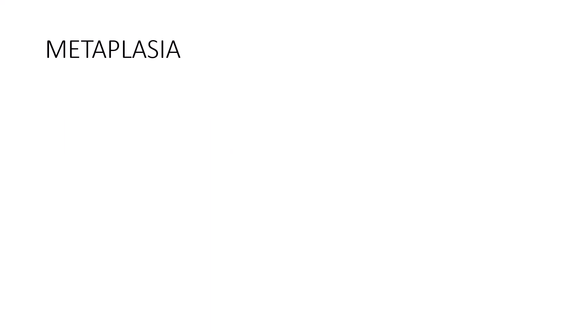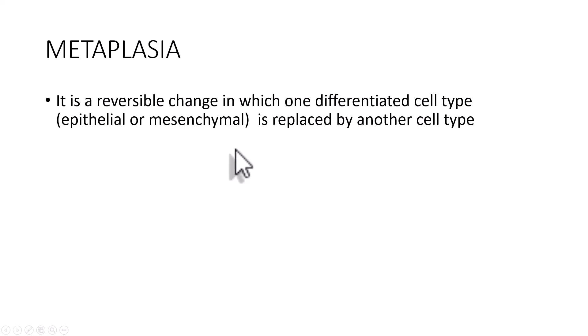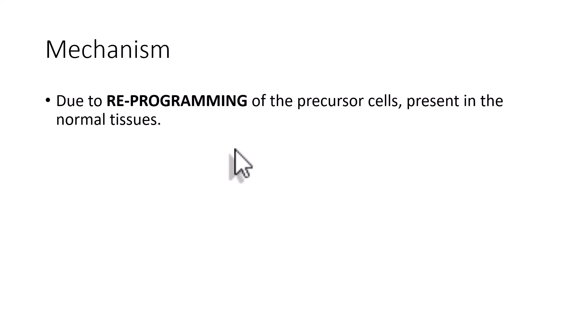What is metaplasia? Metaplasia by definition is a reversible change. Remember, all cellular adaptations are reversible changes. So metaplasia is also a reversible change in which one differentiated cell type is replaced by another cell type. Make sure that you mention this differentiated cell type. This differentiated cell type can be either an epithelial cell or a mesenchymal cell.